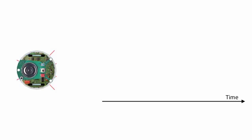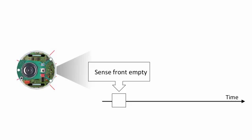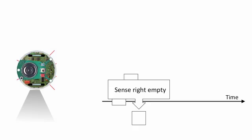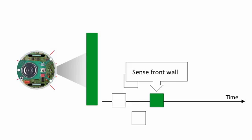The robot has infrared diodes and sensors that it can use to detect the presence of walls in front, to the left, or to the right. The robot turns on the corresponding diode and activates the corresponding sensor. The sensor returns a bit that indicates whether the reflected light exceeds a threshold, which signals a wall within approximately 5 cm.